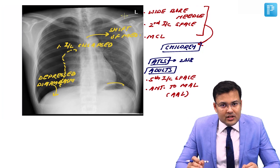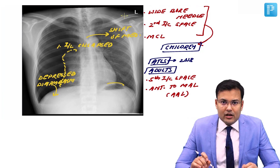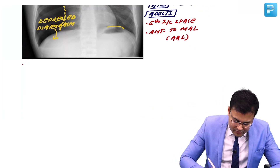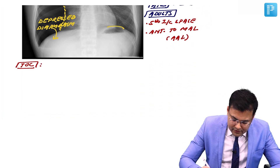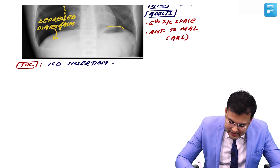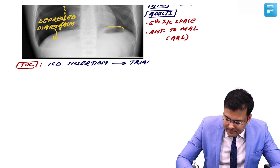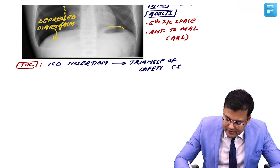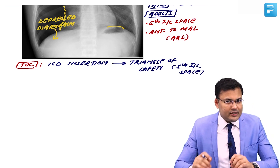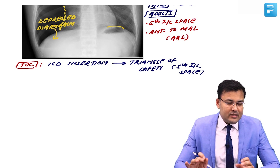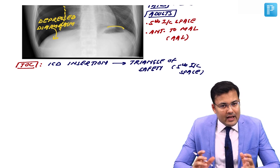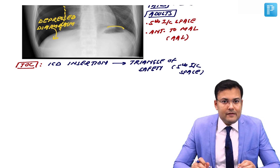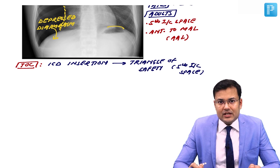To summarize treatment: the emergency treatment is needle decompression — in children, wide bore needle in second intercostal space in mid-clavicular line; in adults, wide bore needle in fifth intercostal space in anterior axillary line. The definitive treatment of choice is ICD (intercostal chest drain) insertion in the fifth intercostal space within the triangle of safety. In exam questions specifying an adult (e.g., 20 years), the answer is the fifth intercostal space.